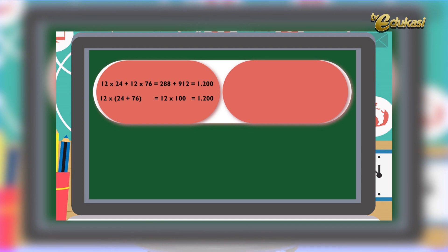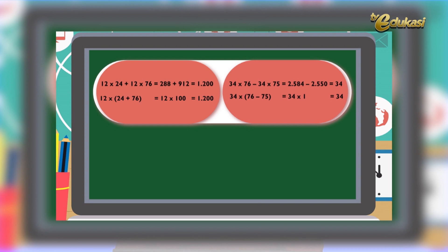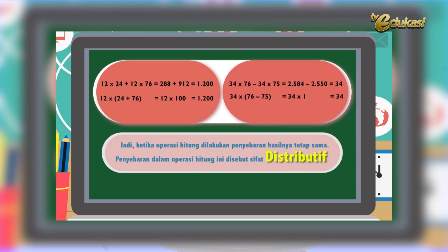Lihat berikutnya. 34×76 dikurangi 34×75 sama dengan 2584 dikurangi 2550 sama dengan 34. Ini menjadi 34×(76−75) sama dengan 34×1 sama dengan 34. Lebih mudah ya anak-anak? Coba apa kesimpulan operasi hitung tadi? Jadi, ketika operasi hitung dilakukan, penyebaran hasilnya tetap sama. Penyebaran dalam operasi hitung ini disebut sifat distributif.